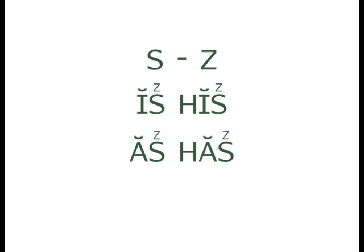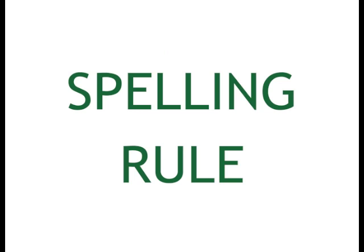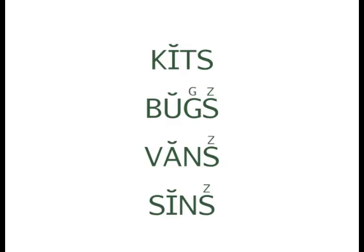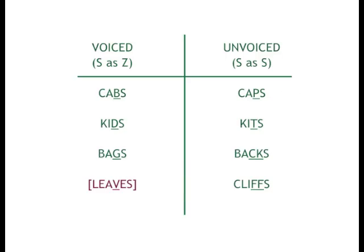Many words ending in a single S have S with its consonant pair sound of Z. This also happens in words ending with -se. Here is the spelling rule for making words plural: words that end in a hissing sound will add -es, and words that end in a non-hissing sound will just add -s. Words ending in a hissing sound have -es with S as its consonant pair sound of Z. Words with a voiced consonant before the S will have S as Z; unvoiced before the S will have a regular S sound.